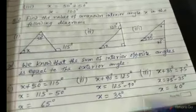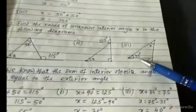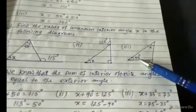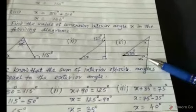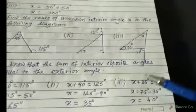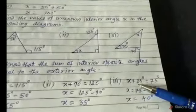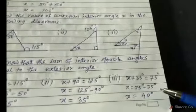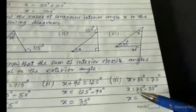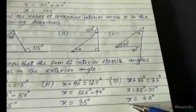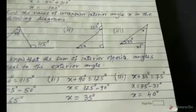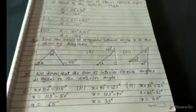In the third part, x and 35 are interior opposite angles and 75 degrees is the exterior angle. Therefore x plus 35 equals 75 degrees, and x is equal to 75 degrees minus 35 degrees, which means x is equal to 40 degrees. Okay, thank you.